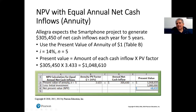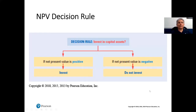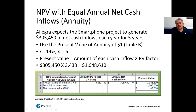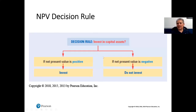The decision rule is: if the net present value is positive, it's a go; if negative, it's a no-go — do not invest. That applies when reviewing just one alternative. In many cases, the initial investment will be larger than the present value of future cash flows, producing a negative NPV. In our case, we're looking at two investments, so we can compare them.